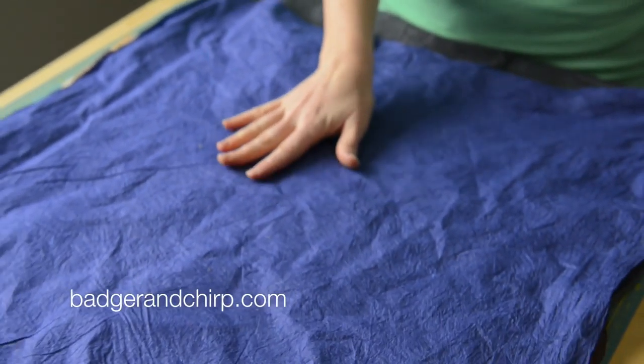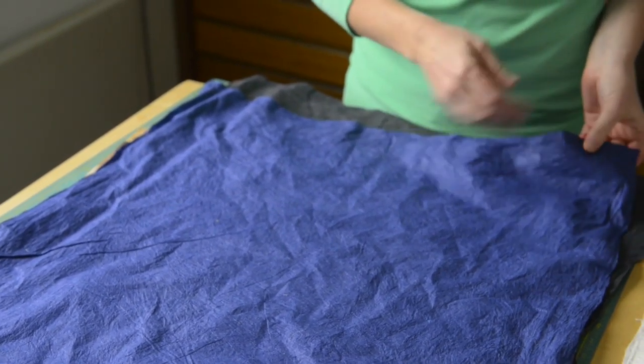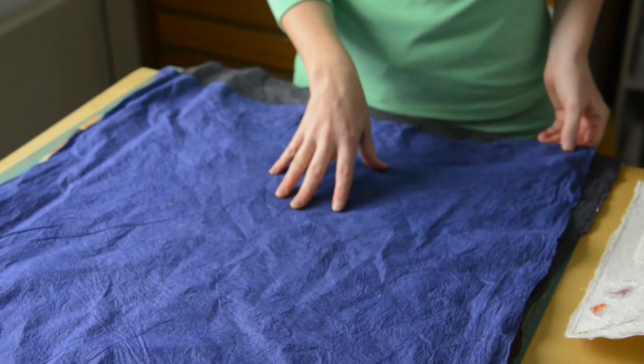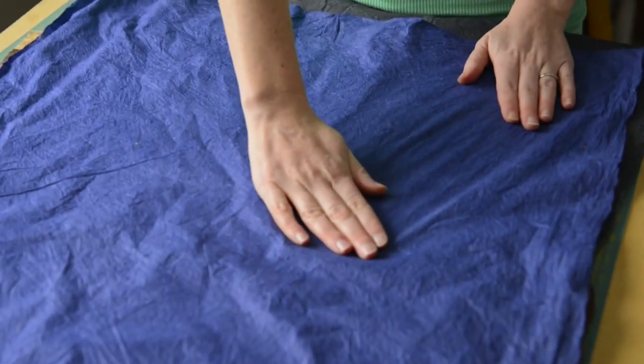However, when you get it wet it's going to be very easy to tear. So again you'll want to use something very thin like wheat paste when you're working with it. And often if I'm using this I'll actually put the paste sometimes just on the board itself instead of onto the paper. That way my brush when I go across it, it's not pulling on the paper.